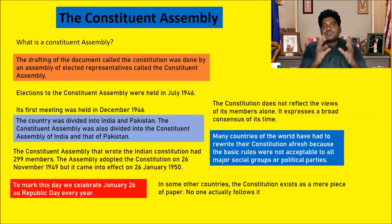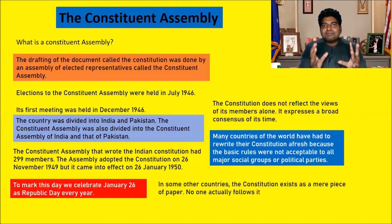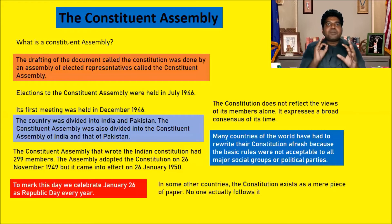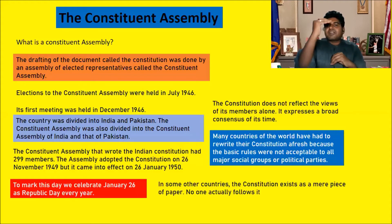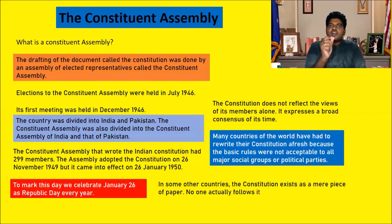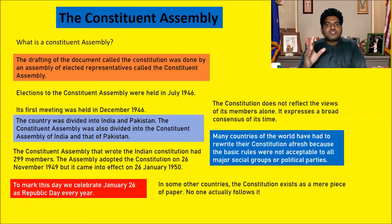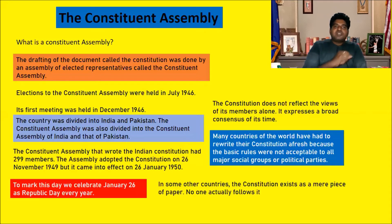If you were to print the Constituent Assembly debates, they would fill 12 bulky volumes of printed books — that is how explicitly and in detail they discussed and came to a common conclusion. We can say our Constitution is very successful. We should salute our Constituent Assembly makers, starting from Baba Saheb Ambedkar to all 298 other members who had a great vision and rose to the occasion.